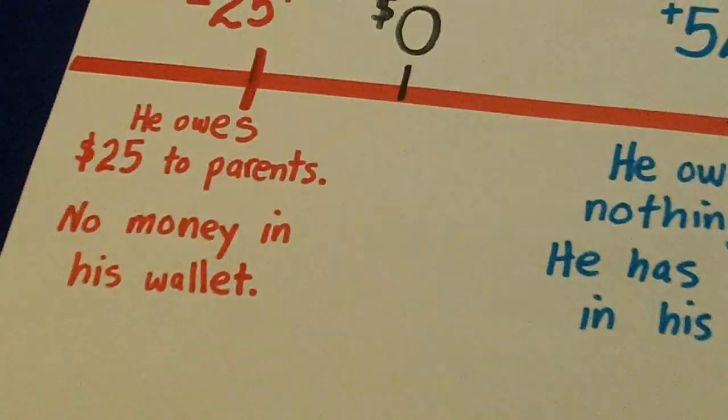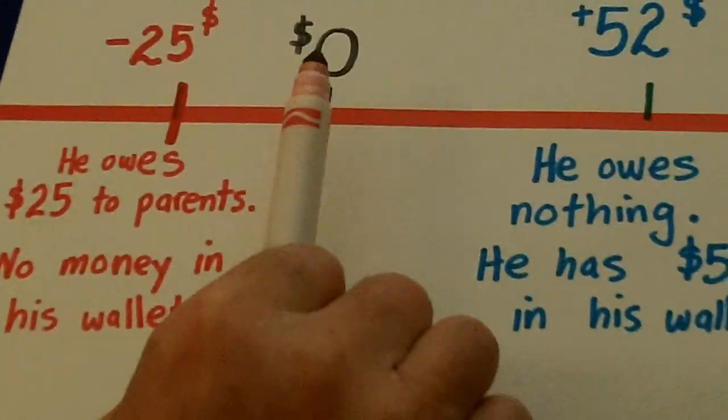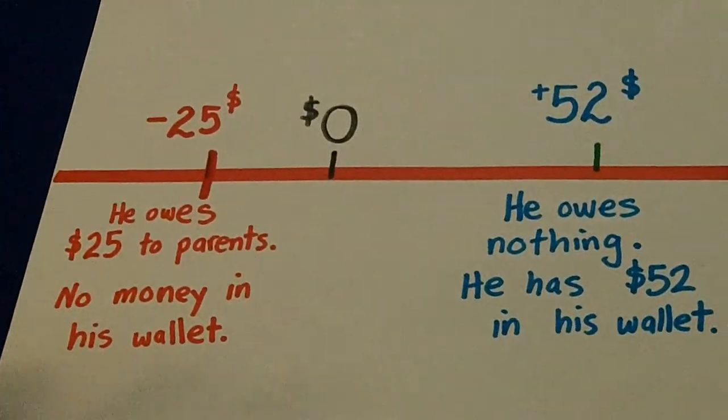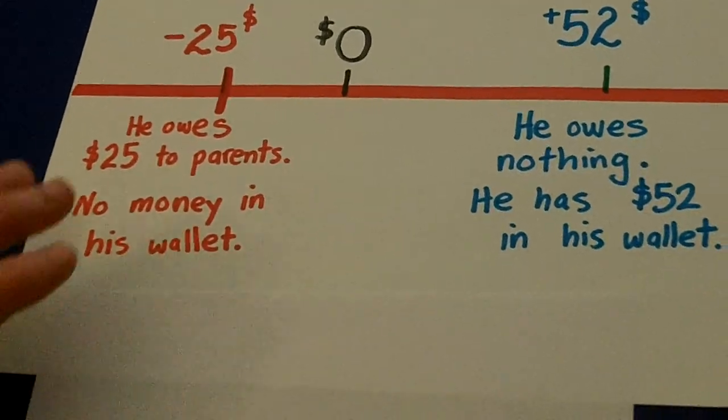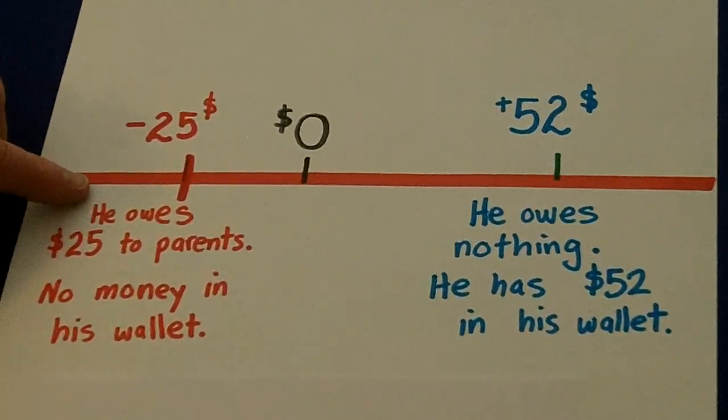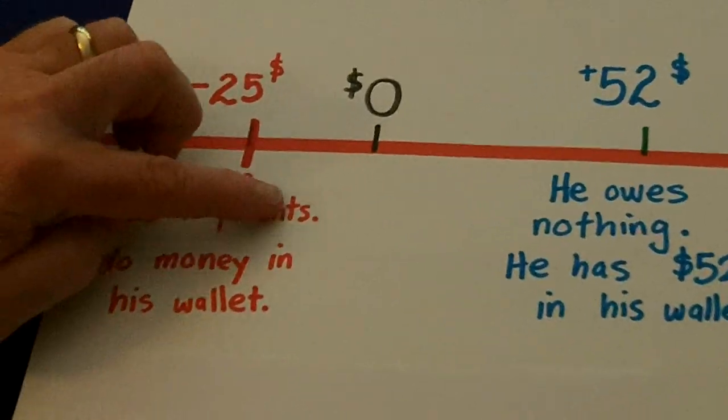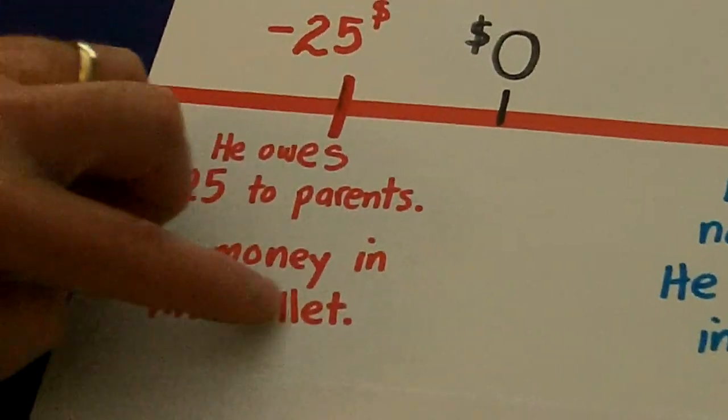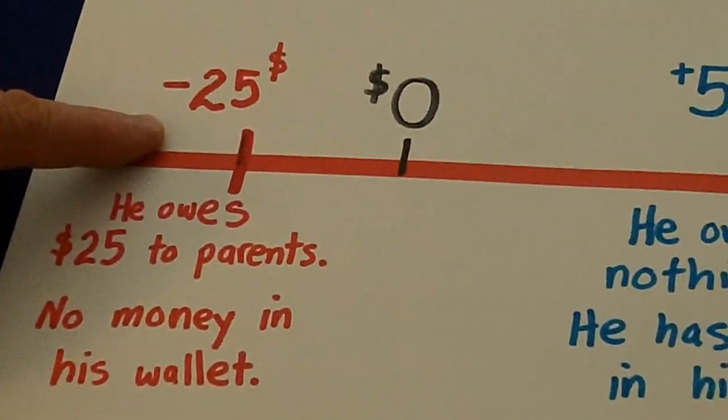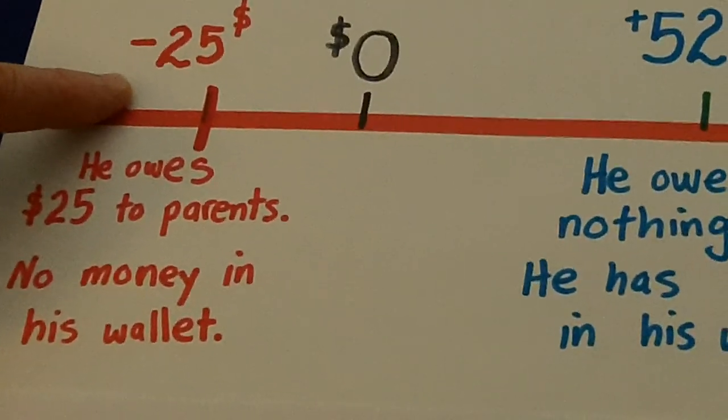Here's a problem with money. So here's 0, and 0 represents no money in your wallet. Now this guy, he starts out where he owes 25 bucks to his parents. He has no money in his wallet. So he is $25 in debt.